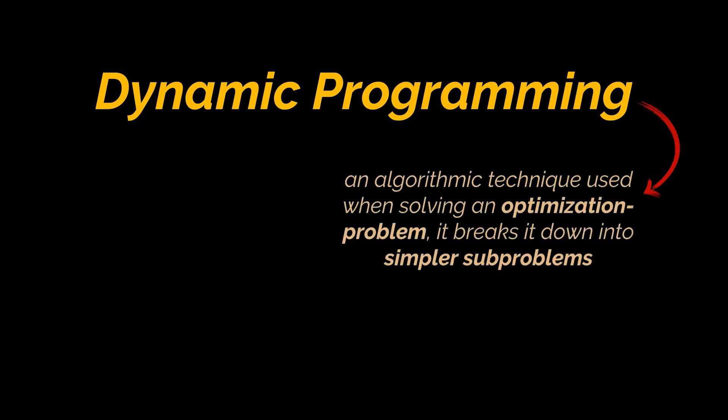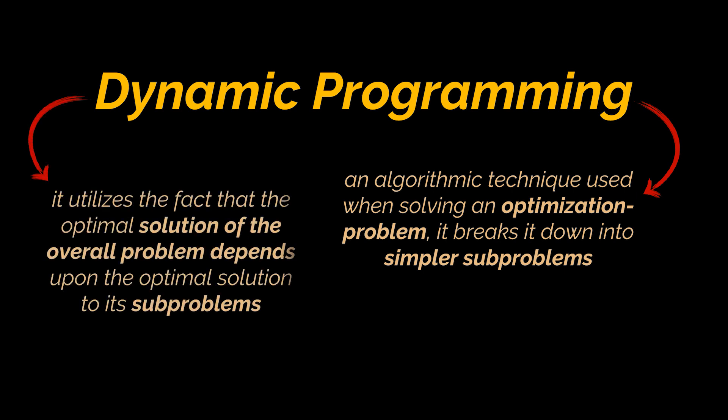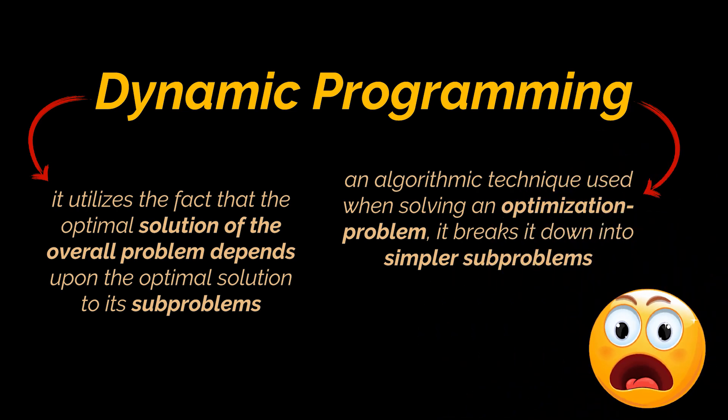Dynamic programming, or DP, is an algorithm technique used when solving an optimization problem. It breaks it down into simpler sub-problems and utilizes the fact that the optimal solution to the overall problem depends upon the optimal solution to its sub-problems. But isn't that exactly how we defined recursion in one of our previous videos?